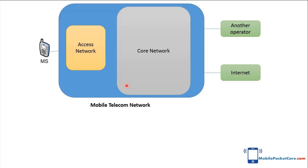Let's get a quick overview of the Mobile Network Core field. The Mobile Station should be able to make voice calls in addition to data sessions. The Mobile Telecom Network contains an Access Network and a Core Network. The Access Network connects the Mobile Station to the Core Network, while the Core Network connects to the external world — whether that is another mobile telecom operator or the Internet.